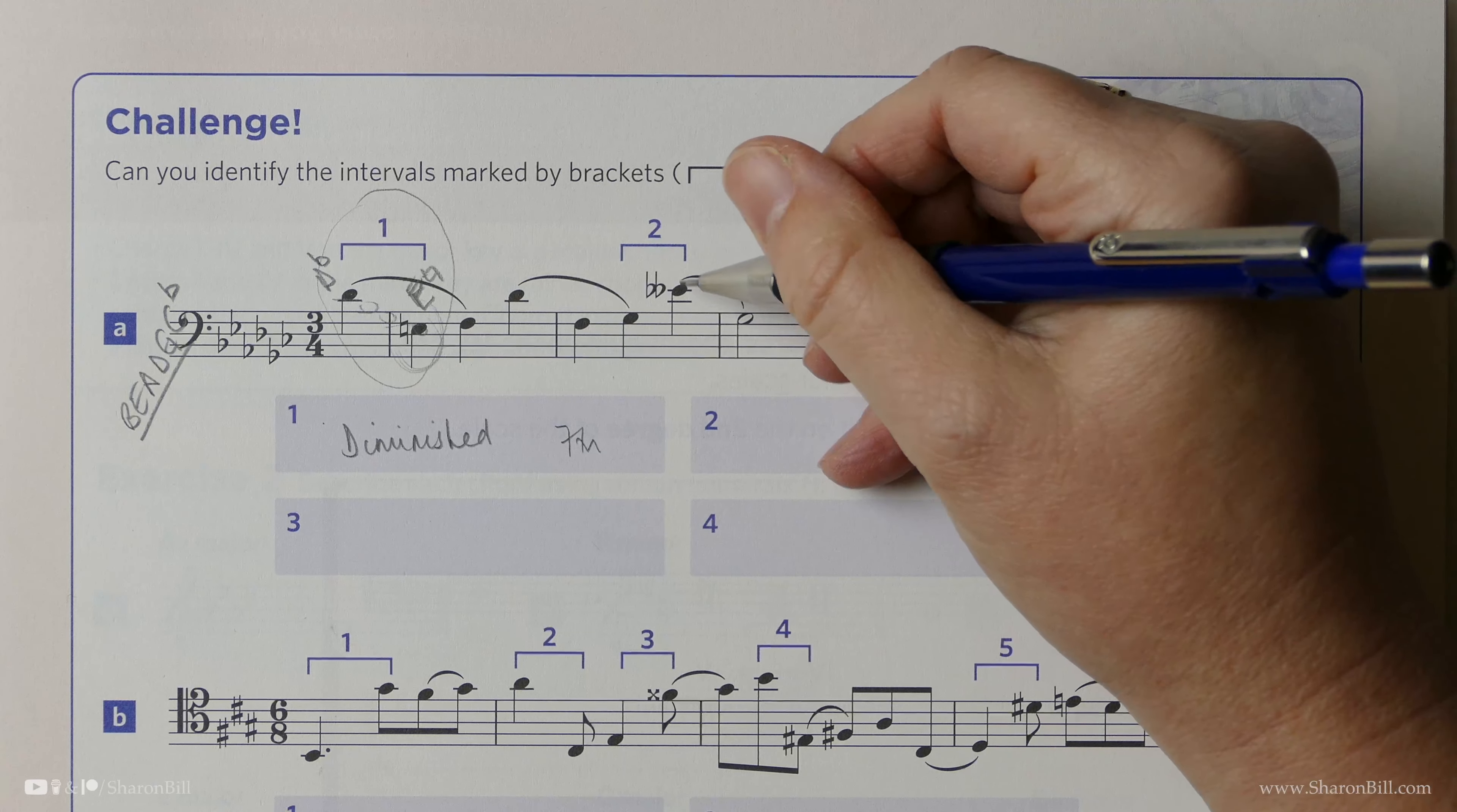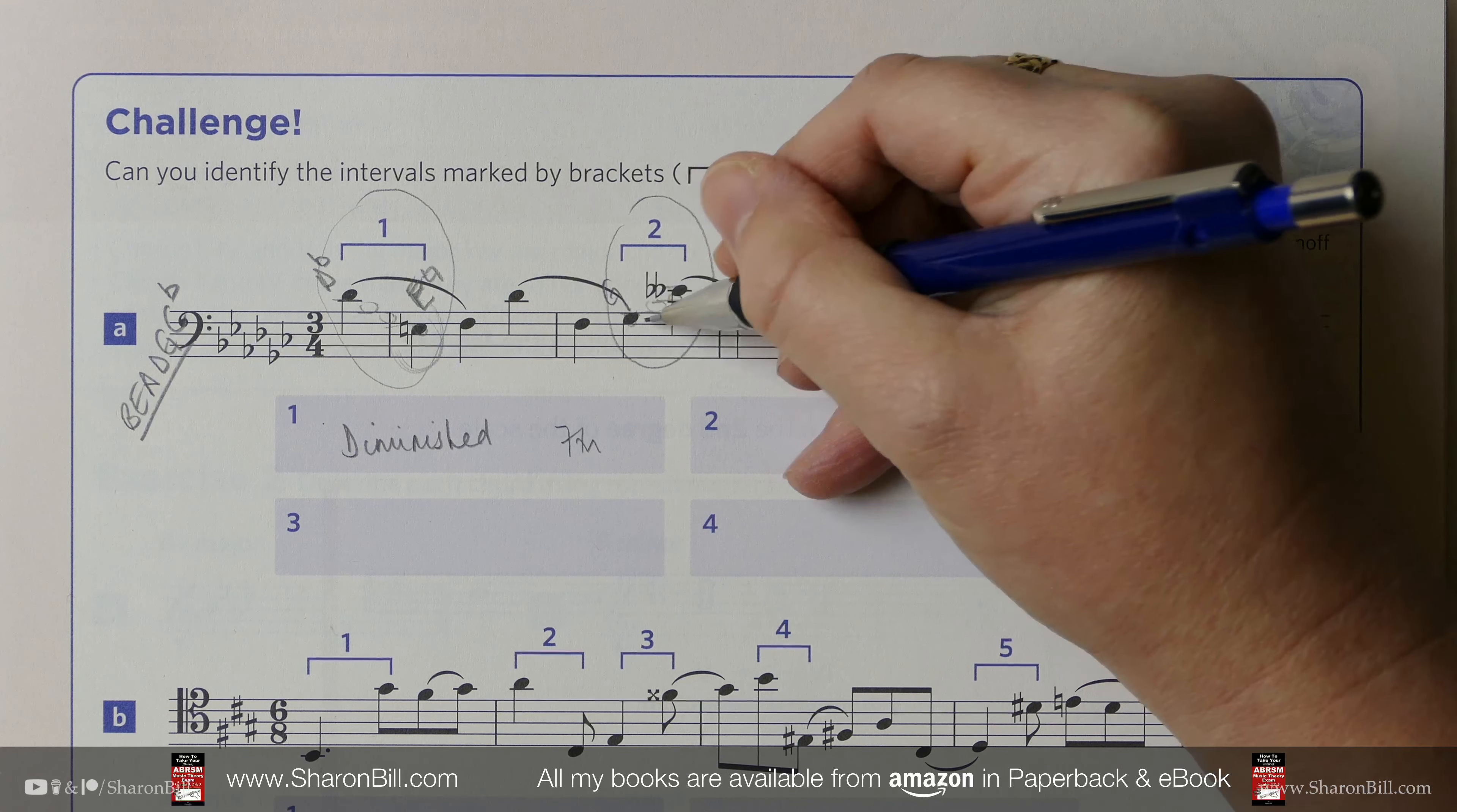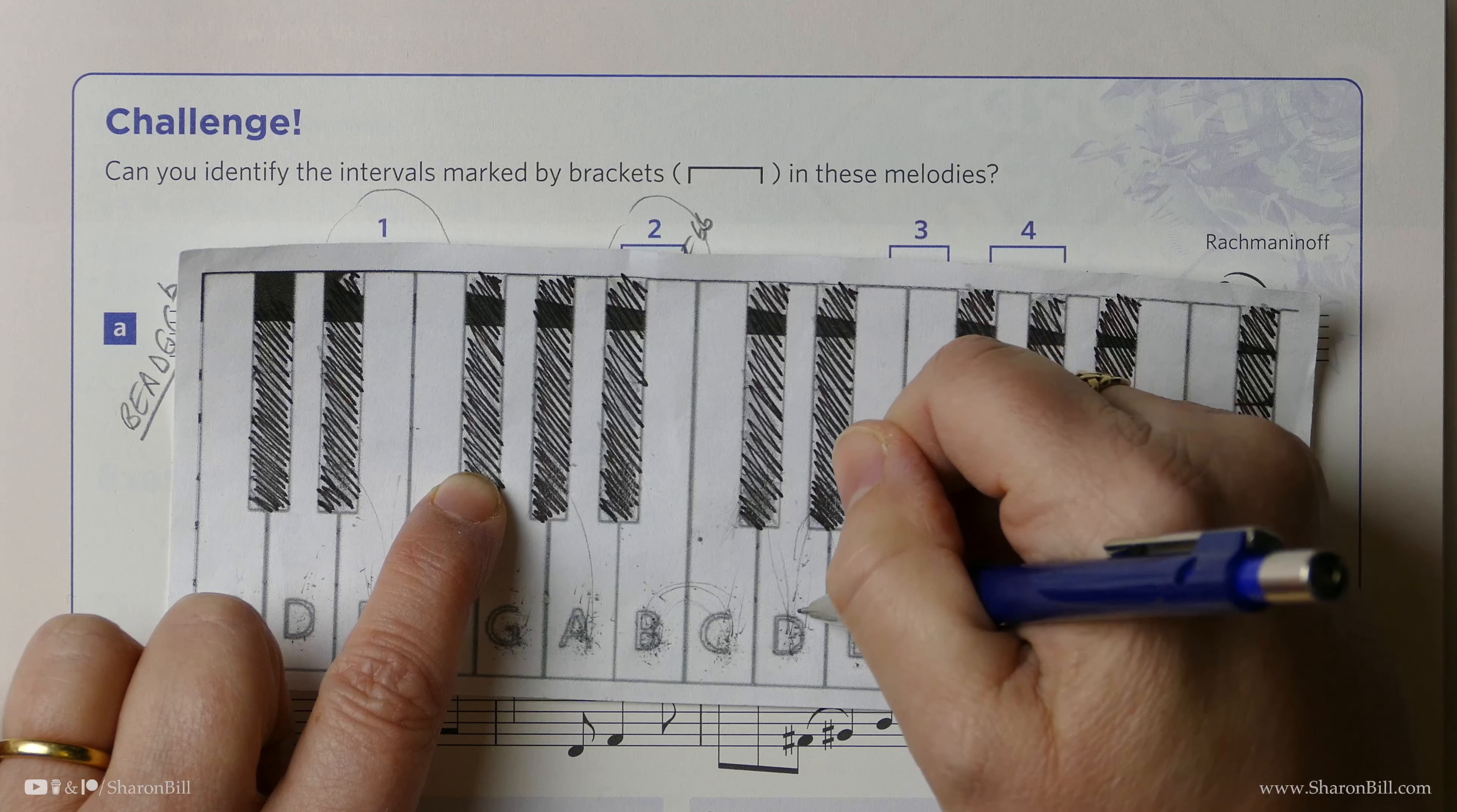So we have the same process here between these two notes that are bracketed. And so we can first of all count the interval. One, two, three, four, five, six. We know that it's a sixth of some sort. So here this note is a G-flat. And then here this is an E-double-flat. So let's look at what's happening here. So in the key of G-flat major, G-flat to E-flat is a major interval. And then because it's E-double-flat, we've gone from major to minor. So it's a minor sixth.